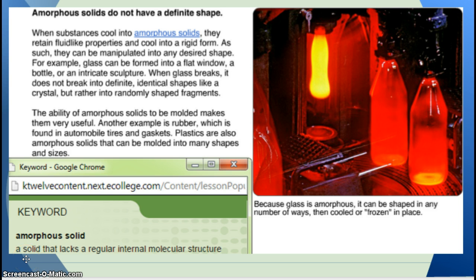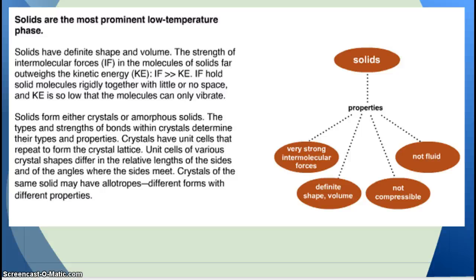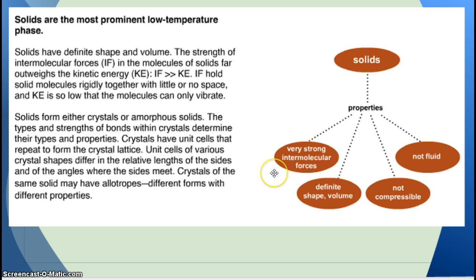An amorphous solid is a solid that lacks a regular internal molecular structure. Solids are the most prominent low-temperature phase and have definite shape and volume. The strength of intermolecular forces in solids far outweighs the kinetic energy — intermolecular forces hold solid molecules rigidly together with little or no space, and kinetic energy is so low that the molecules can only vibrate. Solids form either crystalline or amorphous solids. The types and strength of bonds within crystals determine their types and properties, and crystals have unit cells that repeat to form the crystal lattice. Crystals of the same solid may have allotropes — different forms with different properties. Key solid properties: not fluid, not compressible, definite shape and volume, very strong intermolecular forces.